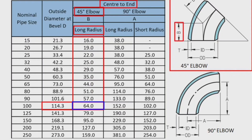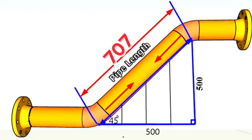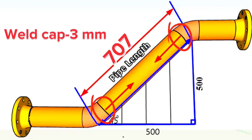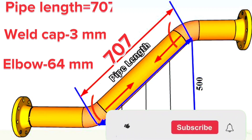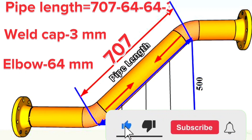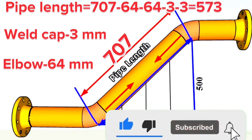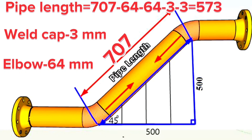Center-to-end, shown as dimension B, is the dimension of the 45-degree elbow. In this isometric, there are welds in two places. If we count each weld gap as 3 mm and the elbows as 64 mm, then the length of the pipe will be equal to 707 mm minus 64 mm minus 64 mm minus 3 mm minus 3 mm. Thus, we calculated and found that the length of the pipe is 573 mm.